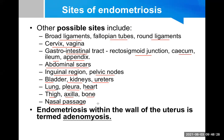A very interesting question is: how does endometrial tissue develop or reach those sites? We'll discuss that in etiology and pathogenesis. One more point: endometriosis within the wall of the uterus is termed adenomyosis, which we will revisit in this class.